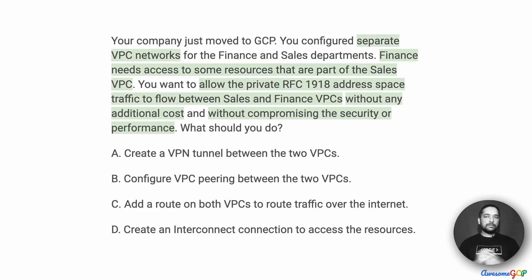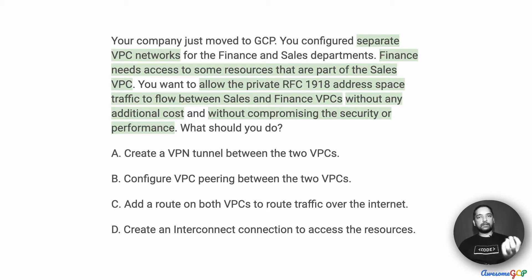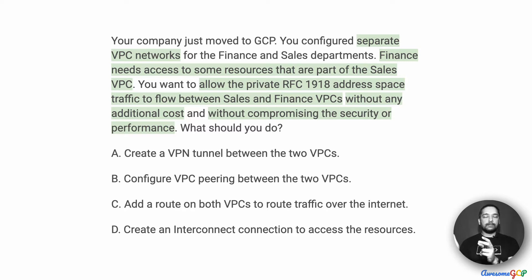In this project scenario, your company has multiple departments. Each department has their own VPC network. So there is a set of IP addresses allocated to the finance department and a set of IP addresses allocated to the sales department. These are part of the RFC 1918 address space.